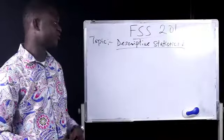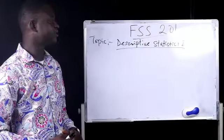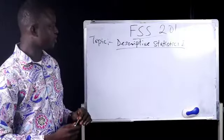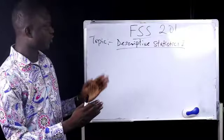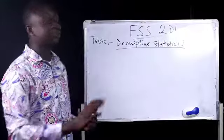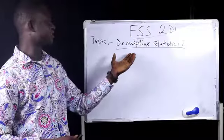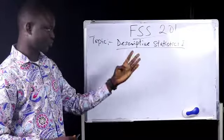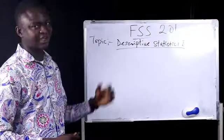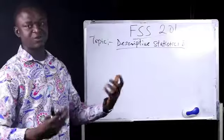Today, we'll be looking at an aspect of statistics called descriptive statistics. In descriptive statistics, we focus on the use of data to take decision without probability, without making inference. Descriptive statistics can be divided into two. We have the measure of central tendency and measure of dispersion, that is measure of spread of data.